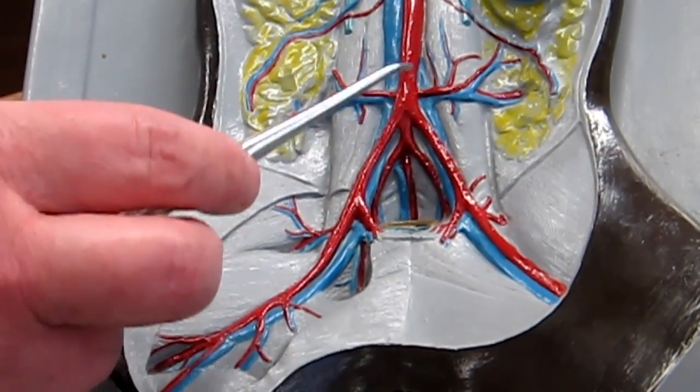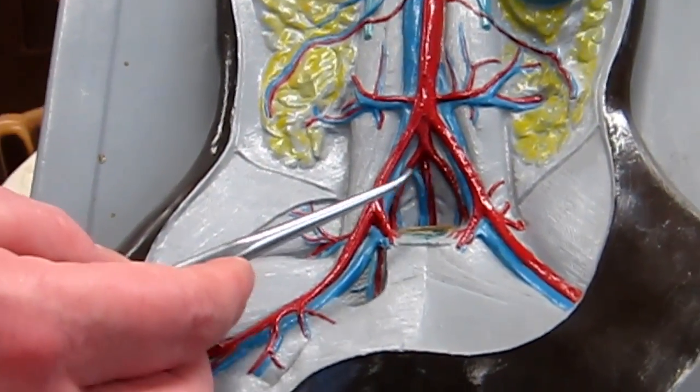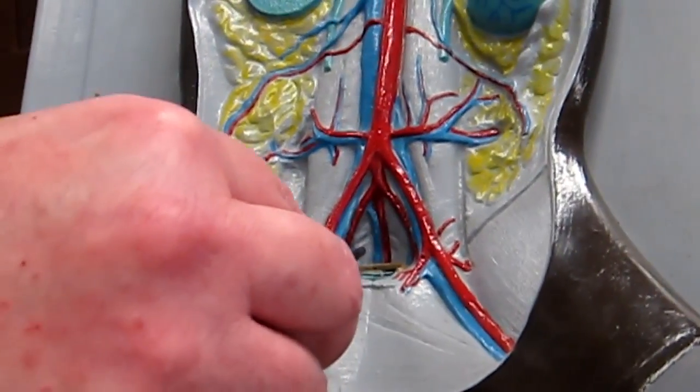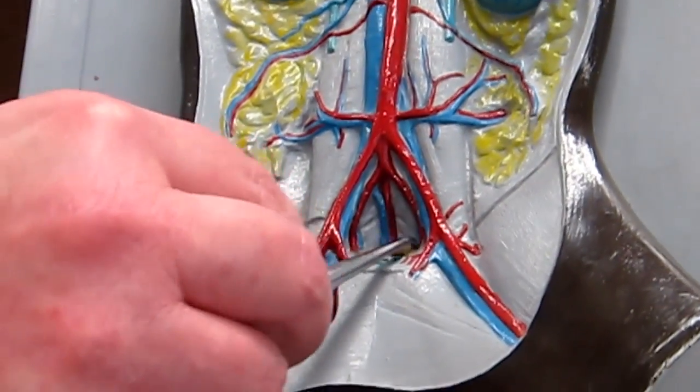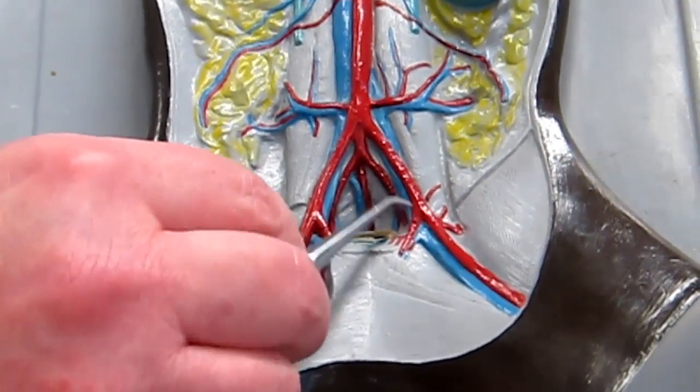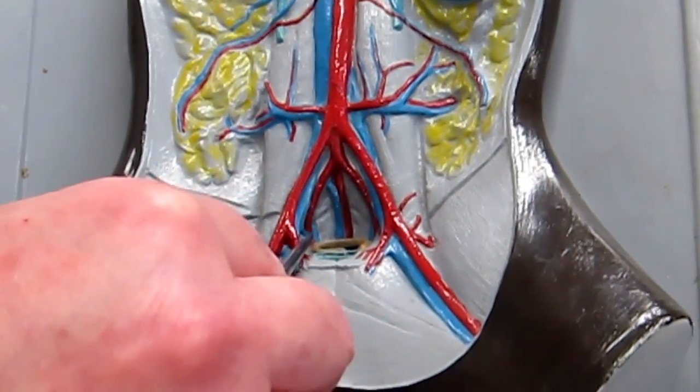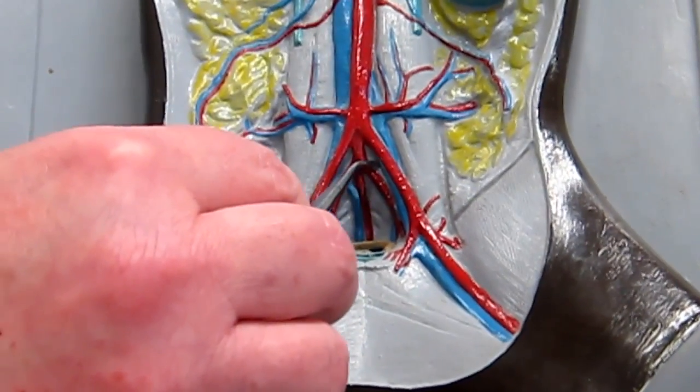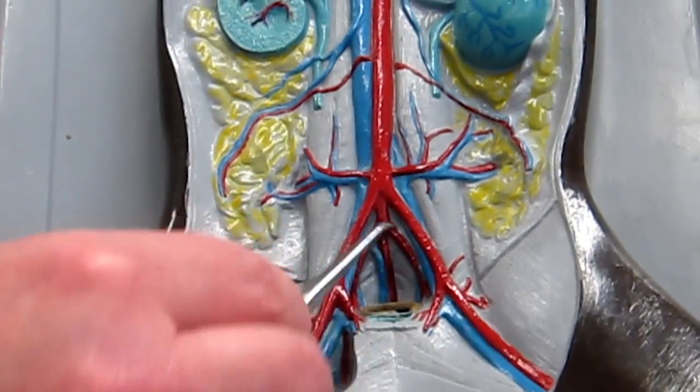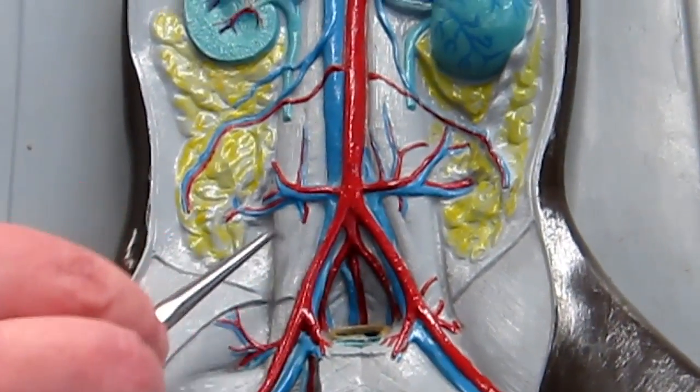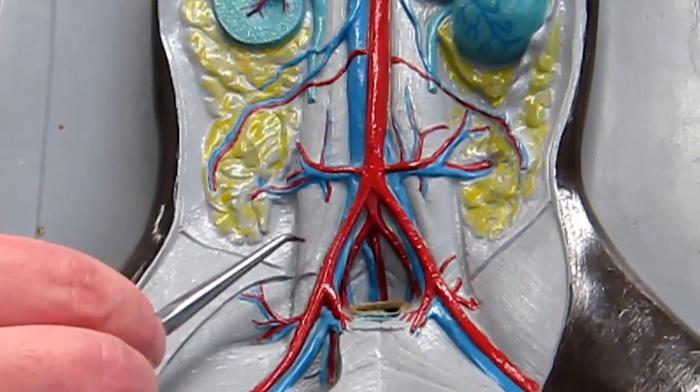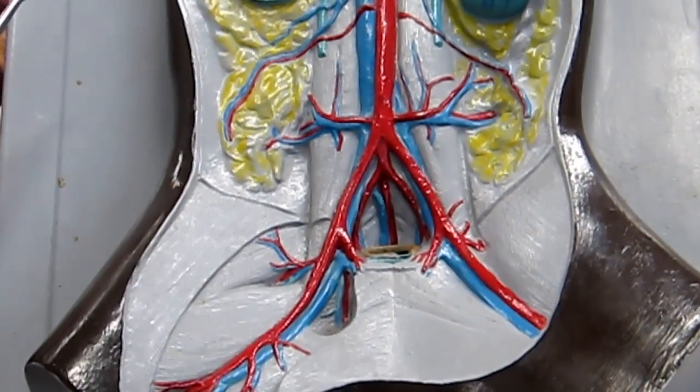The veins in the cat, surprisingly enough, are the same as they are in the human. So we'll have internal iliac veins, external iliac veins, and common iliac veins. So that part, the venous system in the cat is exactly the same as it is in the human in this area. But the arterial system is different.